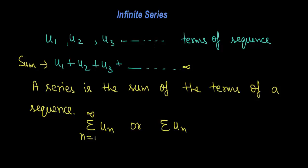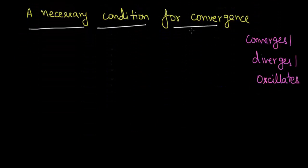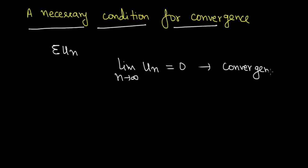Now, how can we check whether any series is convergent or not? To check whether a series is convergent, divergent, or oscillatory, we apply the necessary condition for convergency. For any infinite series sigma uₙ, the necessary condition is that the limit as n tends to infinity of uₙ equals 0. If the series satisfies this condition, the series is convergent.